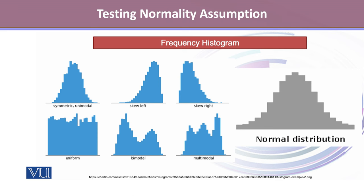When we draw a frequency histogram, our distribution can be symmetric and unimodal. It can be skewed to the left, skewed to the right, it can be uniform, it can be bimodal, or it can be multimodal. But the normal distribution, as we know, is the symmetric distribution. So if our frequency histogram shows a symmetric and unimodal shape, then we get a very strong hint that our sample follows the normal probability distribution.